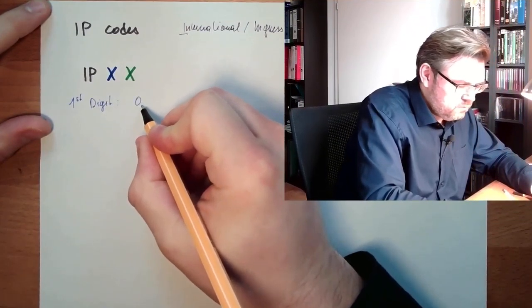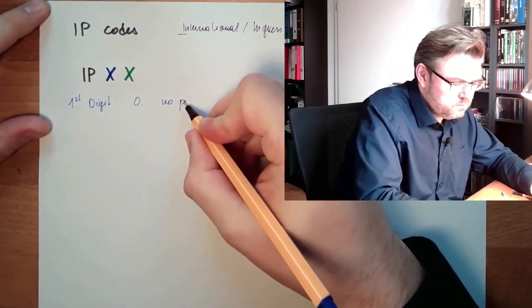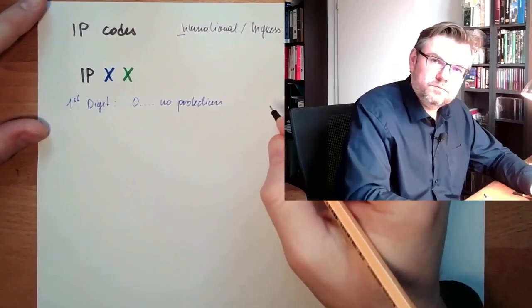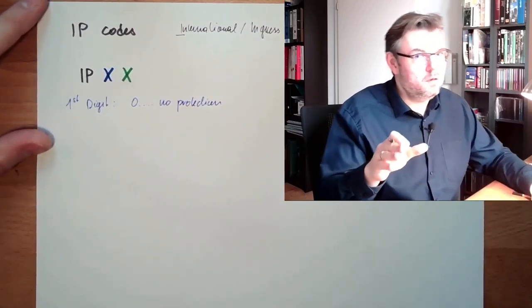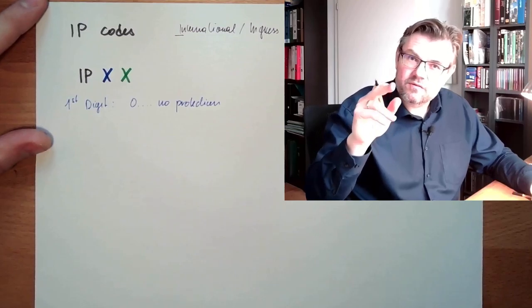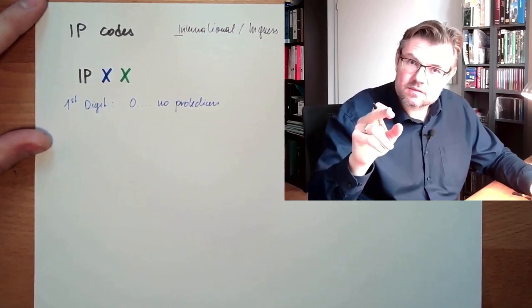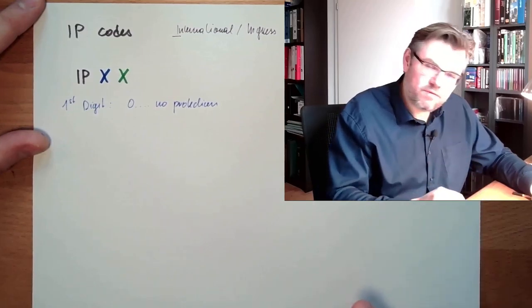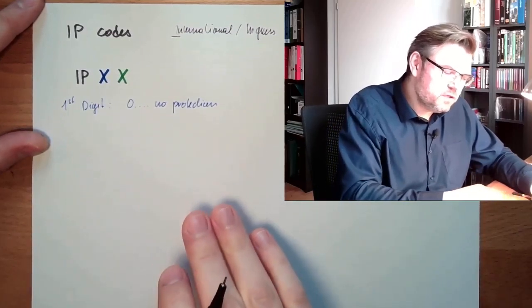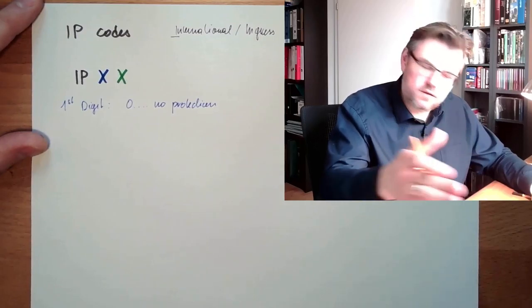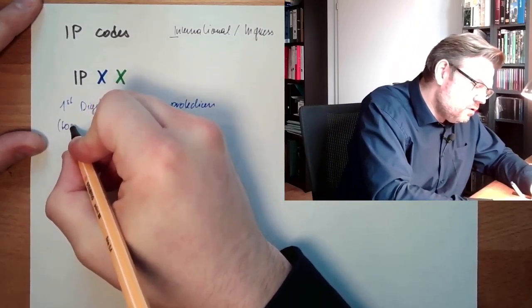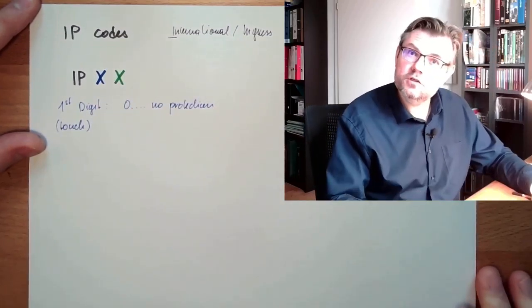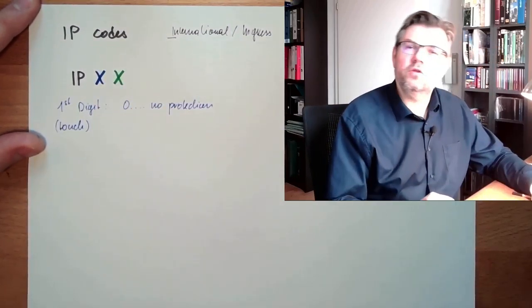If it's a zero, it means no protection. By the way, IP codes are for electrical devices. Not any other harmful devices, electrical devices. So zero provides no protection against touching. First digit, this is the touch.